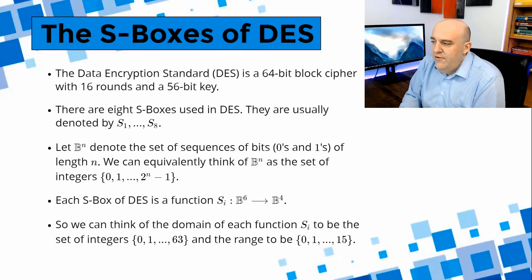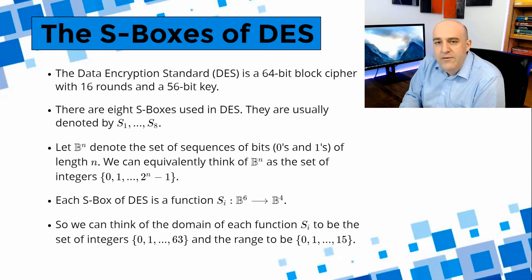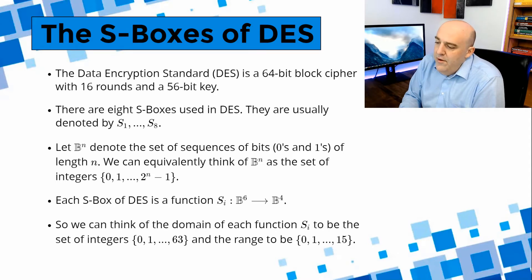The topic of this video is the S-boxes of the Data Encryption Standard, abbreviated DES. DES is a 64-bit block cipher which has 16 rounds and a 56-bit key. It's constructed using the Feistel block cipher construction. There are eight S-boxes used in DES, and they're usually denoted S1 up to S8.